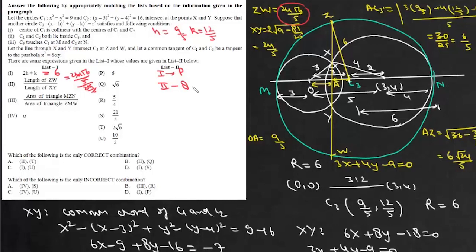Now third one is area of triangle MZN. This triangle will be 1 by 2 base into height. So this area it will be 1 by 2. Now base here is MN and MN is 12 into AZ. AZ is half of ZW and that will be 12 root 6 by 5.